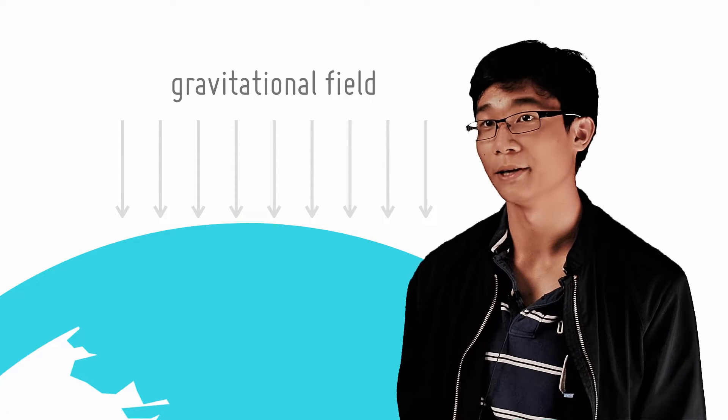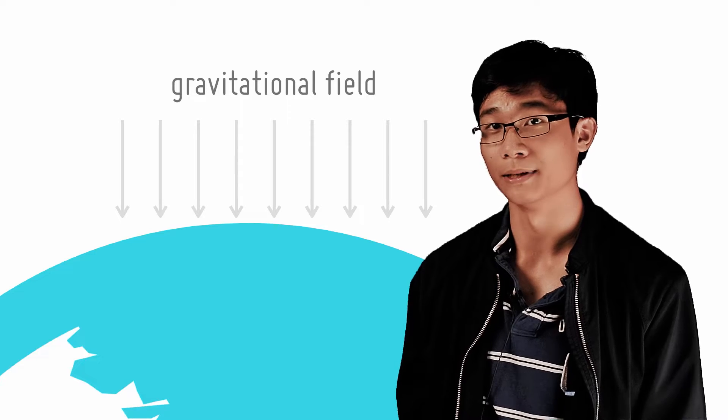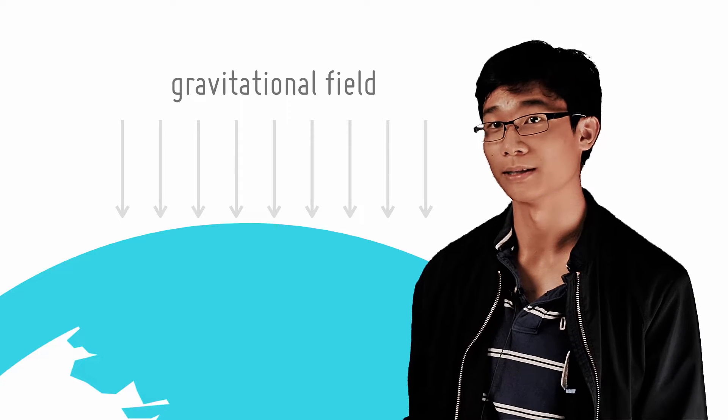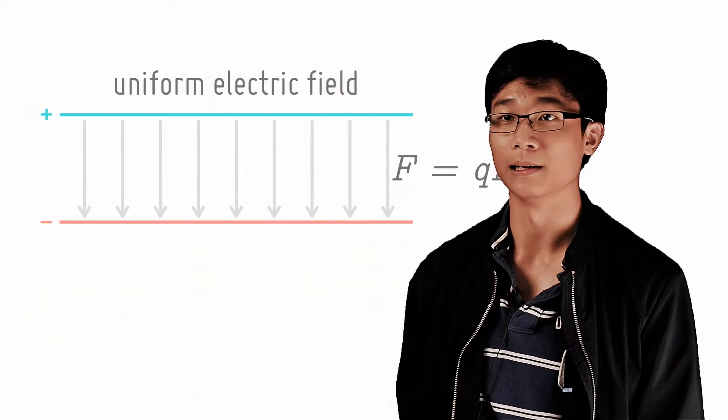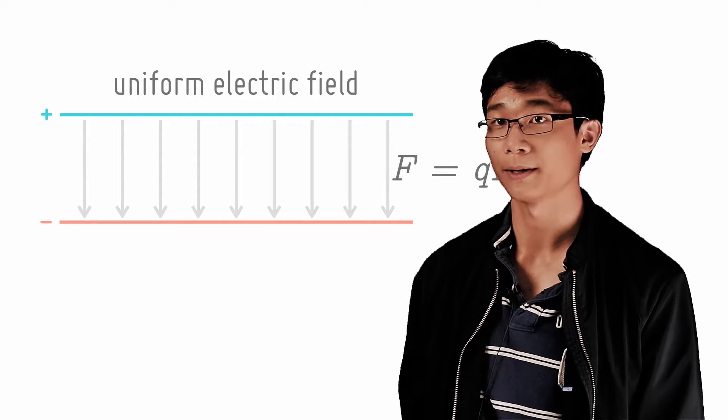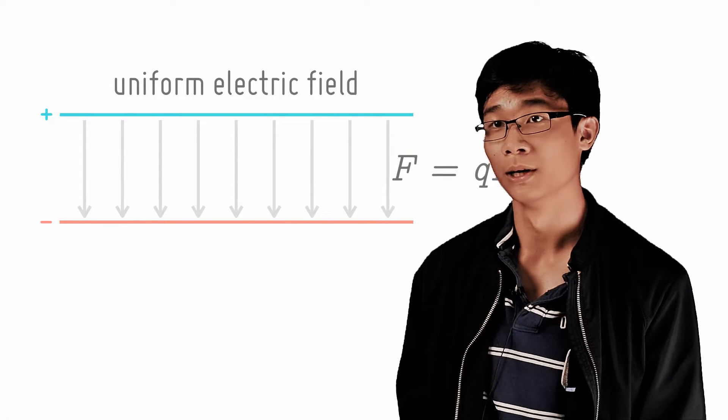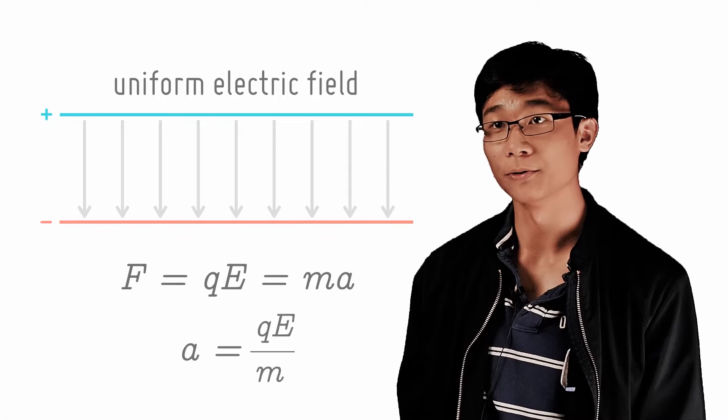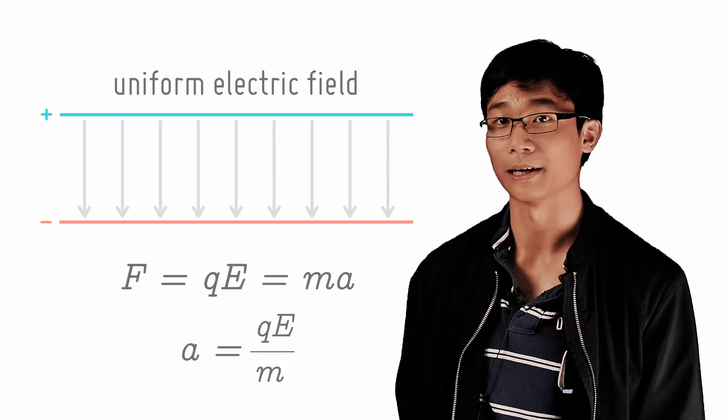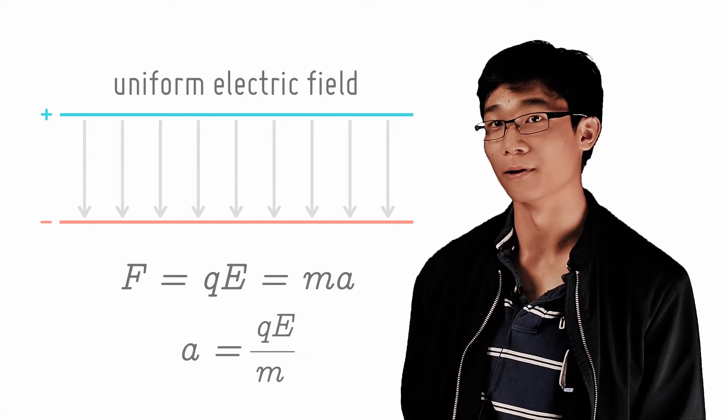We know that the standard equations of kinematics apply to this case because there is a constant downward acceleration. Similarly, in a uniform electric field, a charged particle experiences a constant force no matter where it is, equals to qE, and thus a constant acceleration, a equals to qE over m.